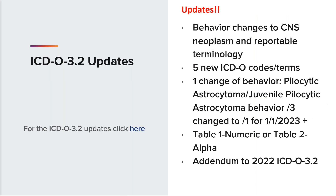The 2023 ICD-O 3.2 update guidelines include comprehensive tables listing changes to ICD-O 3.2, including new ICD-O codes, terminology and reportability changes effective for cases diagnosed January 1, 2023 and forward. The 2023 updates represent changes identified in the recently published fifth edition WHO classification of tumor books. This update includes important behavior information on pilocytic astrocytoma in the central nervous system and other sites. The 2023 update includes five new ICD-O codes or terms, one histology change behavior that is reportable, and 41 new preferred or related terms.